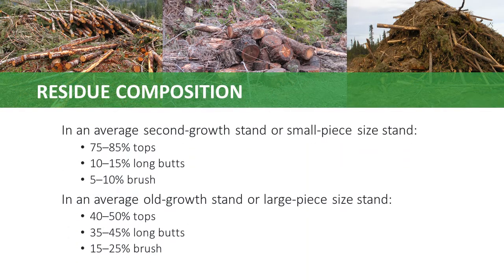The proportion of tops, long butts, and brush in an average pile varies according to stem size and stand age. Second-growth stands, or stands with small piece sizes, tend to have, by weight, a higher proportion of tops versus long butts and brush, whereas old-growth stands, or stands with large piece sizes, tend to have a higher proportion of long butts. This is generally due to higher levels of rot and other defects in old-growth stands, especially in the lower portion of the tree. However, please note there can be significant variance from the averages shown here.